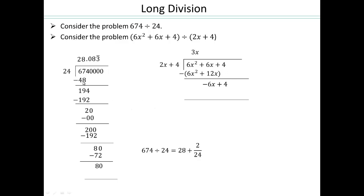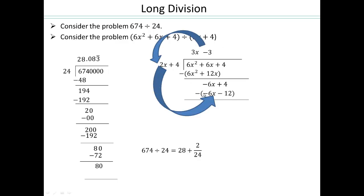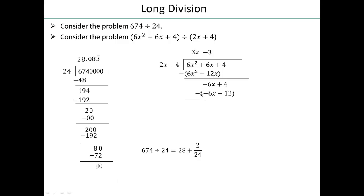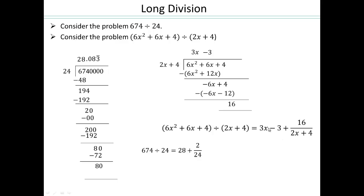The plus 4 comes down now, just like you had to bring the 4 down earlier. So now, 2x times what gives you negative 6x? 2 times 3 is 6, so we need negative 3. Multiply again: negative 3 times 2x is negative 6x, and negative 3 times 4 is negative 12. Do the subtraction: negative 6x minus minus 6x makes plus 6x, so those add up to 0. And 4 minus minus 12 gives 16. Now 2x times nothing gives you 16 because any multiple will have an x. So your quotient is 3x minus 3 and your remainder is 16 over the divisor, which is 2x plus 4.